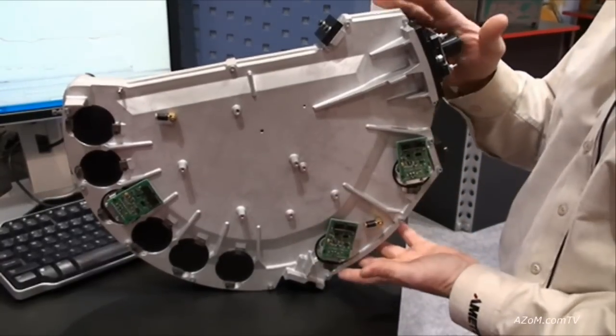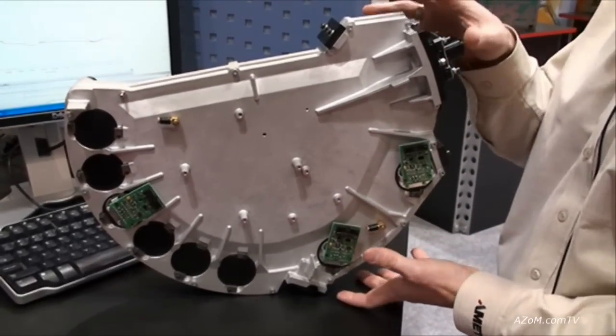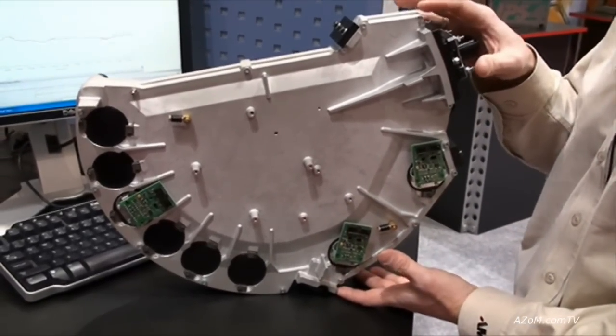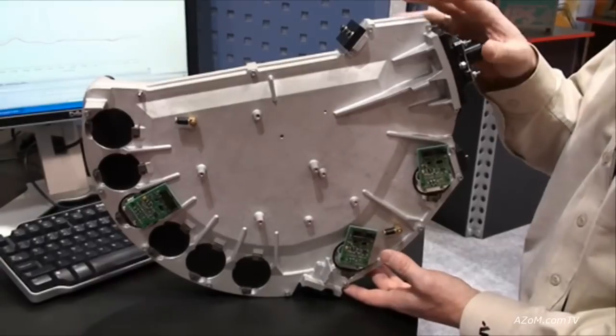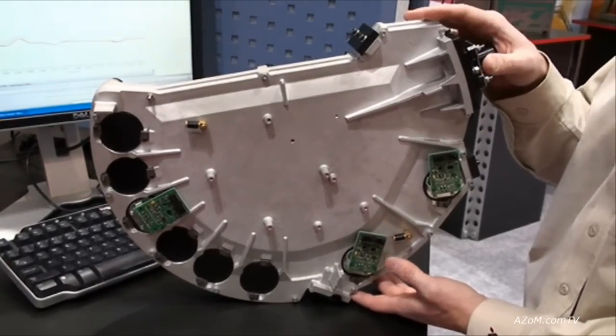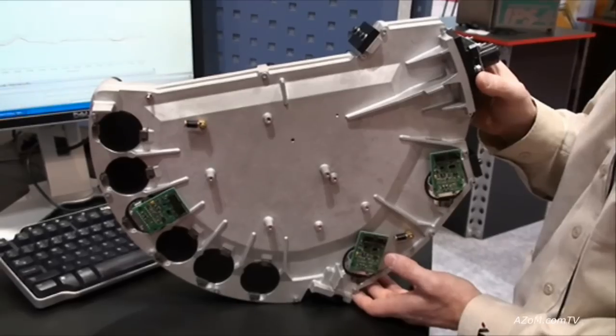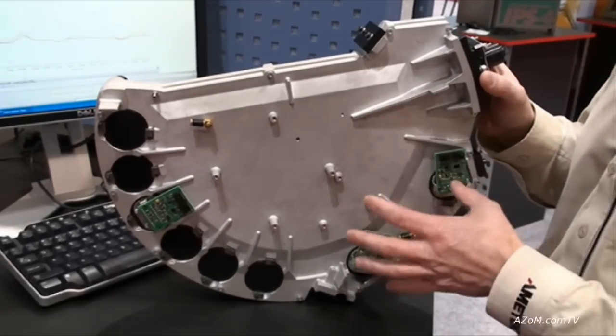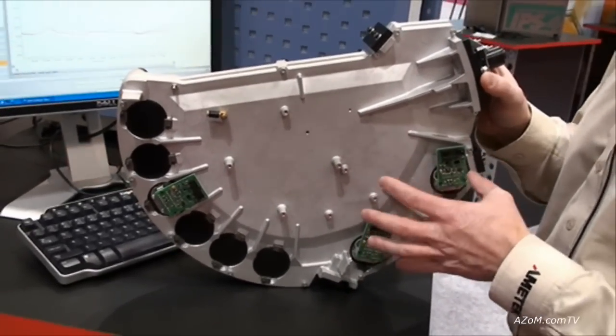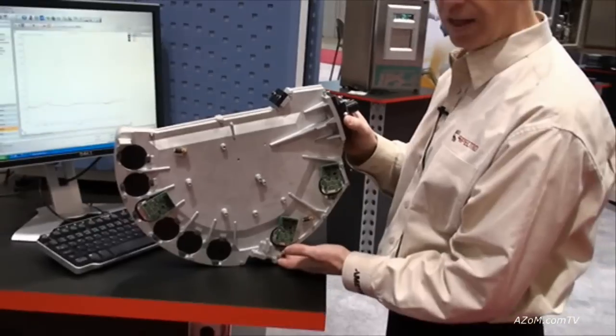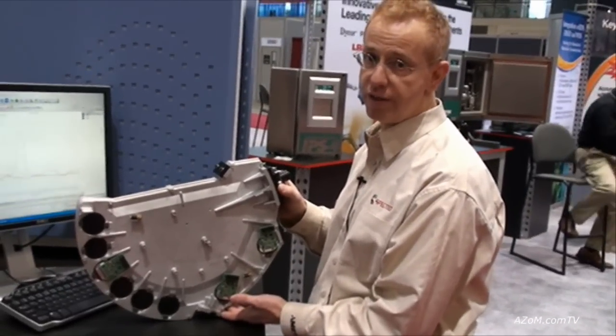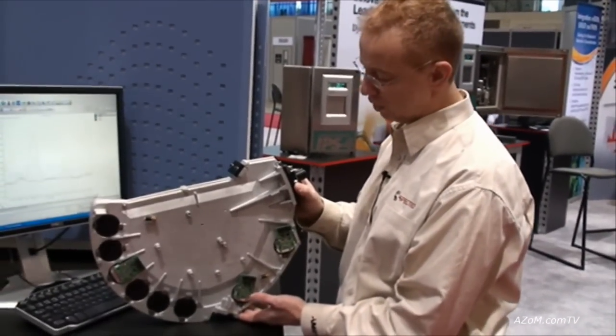is very unique in that typically a system is built and put into a containment system that's either purged or under vacuum. This system, because of its half-shell, is actually not only the spectrometer, but the optical chamber itself. We're able to purge it at a very low flow rate, half a liter per minute, and that allows us to get down to 175 nanometers efficiently.